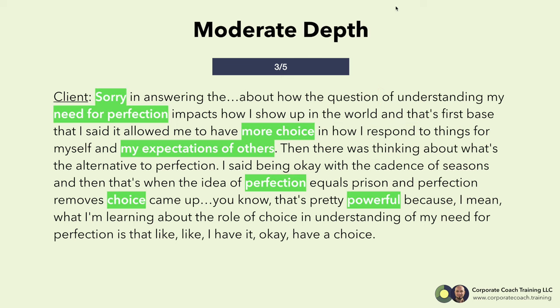Next, let's get into moderate depth — the nice threes out of fives. These are your bread-and-butter choices to pull from the client's language. You have the word 'sorry' here, 'perfection,' 'need for perfection' — there's a lot there. Wanting more choice is a big theme here as well. Expectations of others and the word 'powerful.'